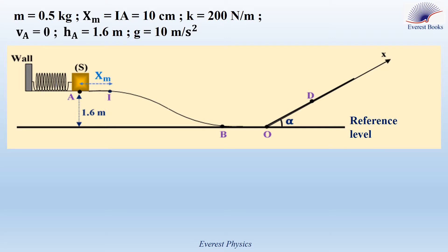Solving a problem on mechanical energy. In the shown figure, a block taken as a particle of mass 0.5 kg is at rest at point A on a horizontal surface AI, and is compressing a light horizontal spring by a displacement Xm equal to IA equal to 10 cm. The left end of the spring, of force constant k equal to 200 N/m, is attached to a wall. The block is released from rest from point A — that means Va equals 0. When the spring returns to its original length, the block leaves the free end of the spring at point I, and moves along the track I, B, O, D. The height of A above the horizontal track BO is Ha equal to 1.6 meters. Take g equal to 10 m/s², and take the horizontal plane containing B and O as the reference level for gravitational potential energy.